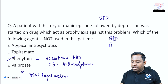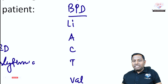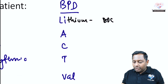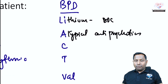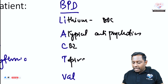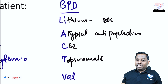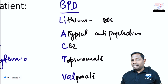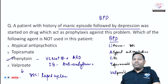In bipolar disorder, we also utilize atypical antipsychotics and topiramate. Use the mnemonic: 'Lithium ACT Well' — lithium, A for atypical antipsychotics, C for carbamazepine, T for topiramate, and Well for valproate. Topiramate is useful for obesity, migraine, bipolar disorder, and as an anti-epileptic; it also promotes weight loss. Valproate, atypical antipsychotics, and carbamazepine can all be utilized. Phenytoin has no role in bipolar disorder.